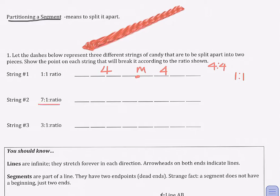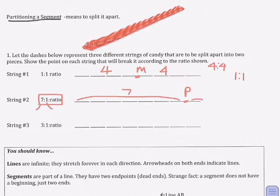So what happens when it's not even? Well, sometimes it's kind of easy, like for the next string. If the ratio is seven to one, it means that one friend is going to get seven times the amount of candy compared to the other kid. So think to yourself where you'd actually break this candy string up so that one friend receives seven times as much candy as the other. One kid is getting seven inches and the other kid's only getting one inch, so the ratio would be seven to one if you split the candy at point P.